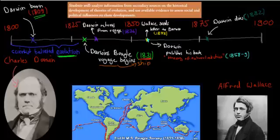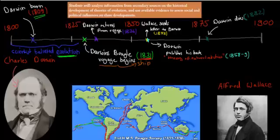He went past the Galapagos Islands — where he saw the finches, including one main finch and many different types of finches. Then he went further past Australia. He actually visited Australia, which is why we have the city Darwin — it was named after Charles Darwin. Then he left Australia, went back past Africa, and returned to England. That trip took five years and changed his view of life quite a lot.